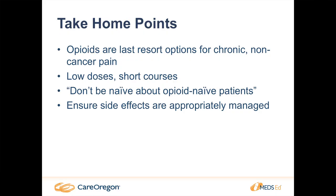Just to wrap up with a few take-home points: opioids are the last resort for patients with chronic non-cancer pain. We have a whole host of other options, and medications are just a small piece of the puzzle — we want to look at all non-medication options too. If a patient is starting opioids for the first time for something acute, look at low doses and short courses. Don't be naive about opioid-naive patients. And take a look at side effects to ensure they're appropriately managed so the patient gets the benefit they need without as many side effects. I look forward to addressing your questions later.